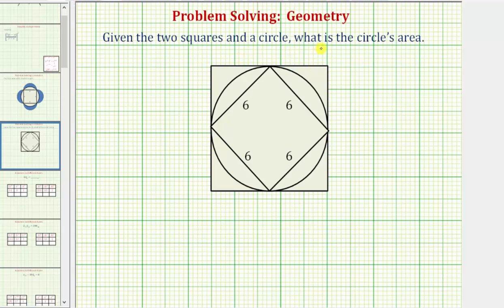Given the two squares and a circle, what is the circle's area? We know the area of a circle is equal to pi r squared, where r is the radius.